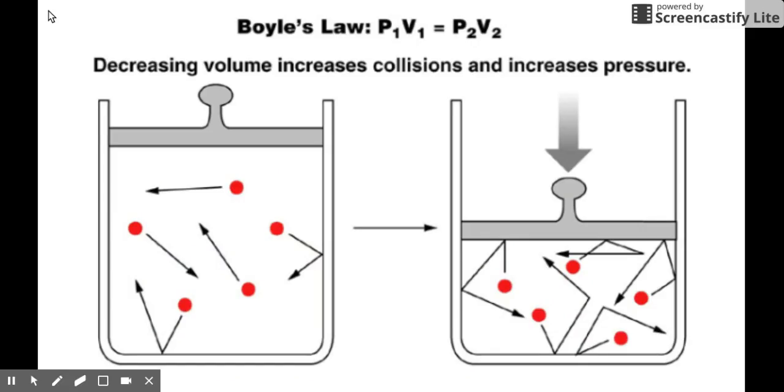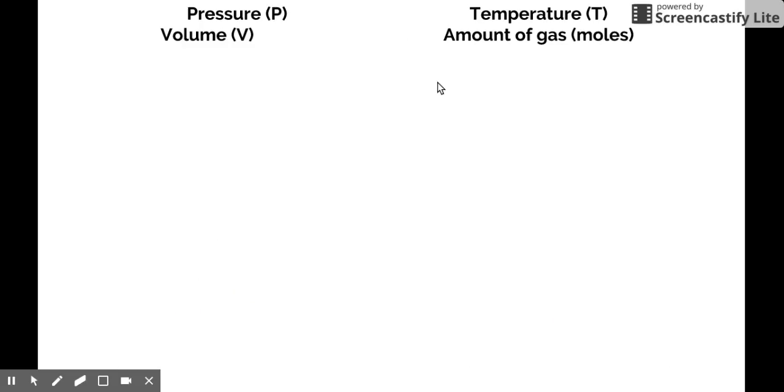Boyle's law is the relationship between your pressure and volume at constant temperature and constant amount of gas. So the Boyle's law equation is just this: P1 V1 is equal to P2 V2. So decreasing the volume increases your collision, thereby increasing the pressure. So there are four variables in gases. We have pressure, volume, temperature, and amount of gas in moles, which is symbolized by N. So if you are to have a proportionality expression for this, we would see that pressure is proportional to the inverse of volume.